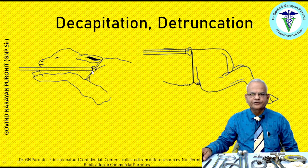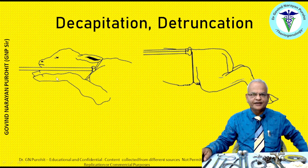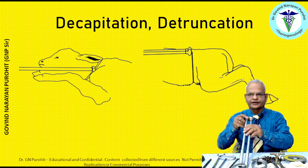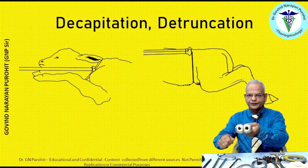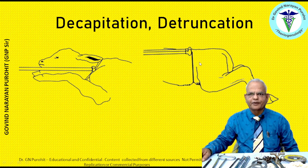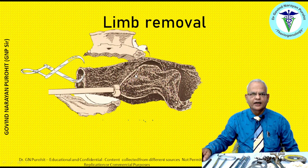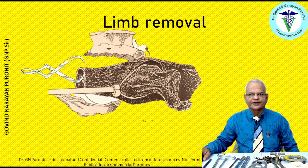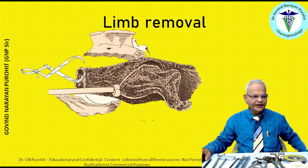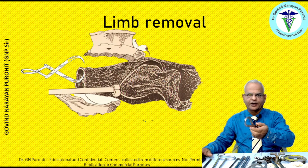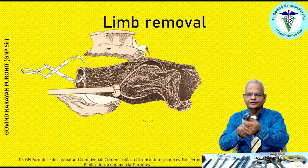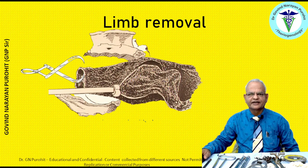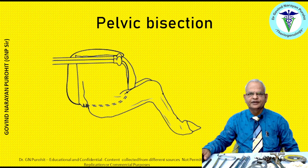Using the fetotome you can perform decapitation — tie the legs of the fetus with a chain, pass the fetotome around the neck, apply pressure near the shoulders, and by a sawing action cut the head. You can also perform detrunkation. For limb removal, place the wire saw around the limb and by sawing action cut the limb, take it out manually, then use the Craze-Cutler hook for applying traction on the exposed part to pull the fetus. The fetotome can also be used for pelvic bisection.